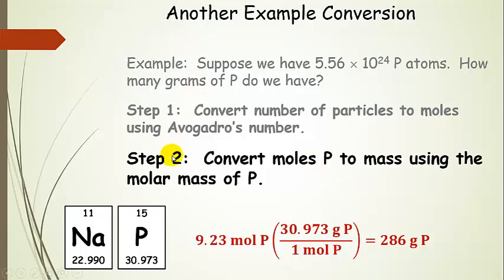Now we're going to take the moles of phosphorus we just calculated and convert it to mass, because the question asked: how many grams of phosphorus do we have? We know how many moles we have, but we don't know how many grams. We're going to use the molar mass of phosphorus: 9.23 moles of phosphorus, and in one mole of phosphorus there are 30.973 grams. Multiplying these together, we get 286 grams of phosphorus.